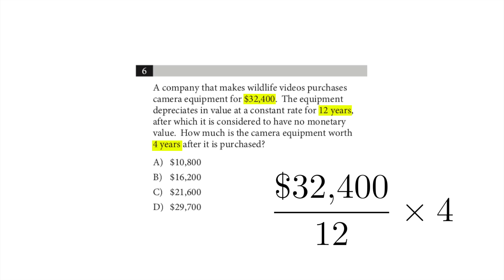You should realize that after four years, when the equipment depreciates over 12 years, a third of the time has passed because four is a third of 12. So you have to calculate a third of that amount — that's the amount of money that's lost. Two-thirds, or twice that amount, is what's left.